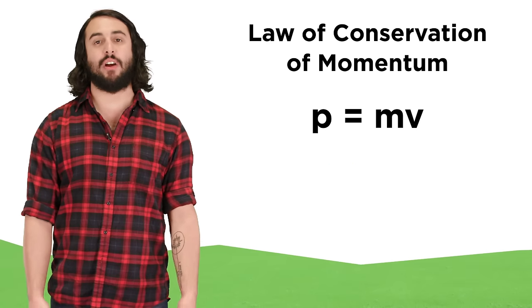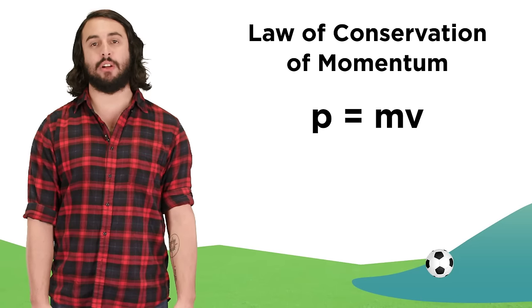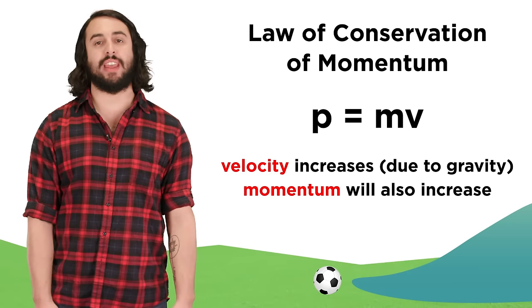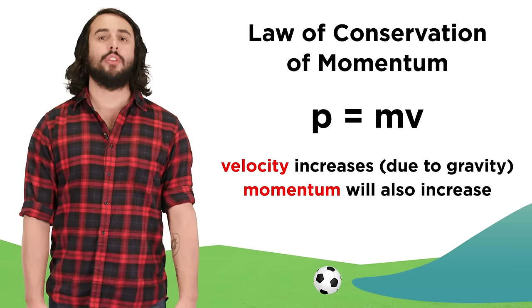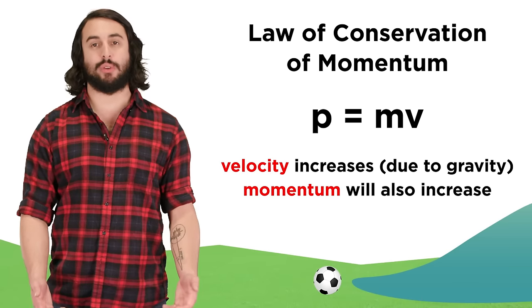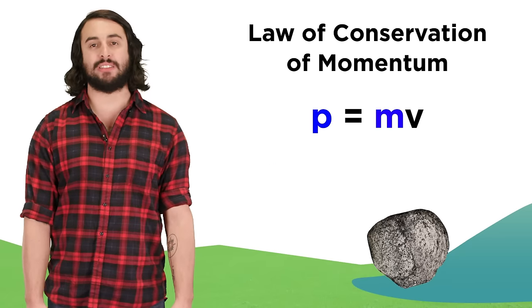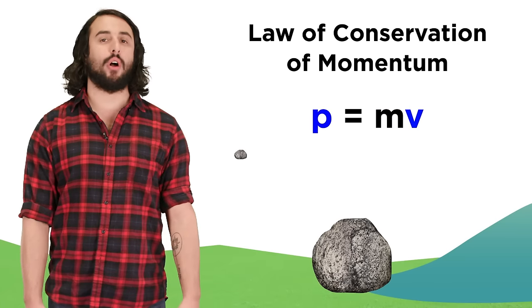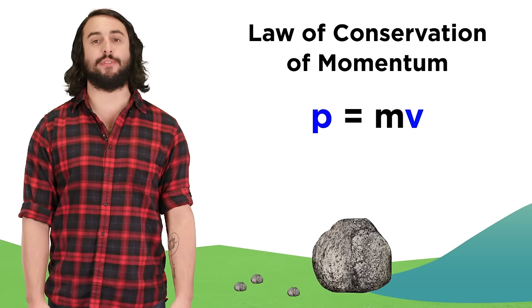Our everyday use of the word is fairly accurate — we might say that as a ball rolls down a hill it will gather momentum. This is true because its velocity will increase as the force of gravity accelerates it towards the ground. The more momentum the ball gathers, the more difficult it will be to bring it to a stop. An object in motion can have a larger momentum by virtue of being more massive, like a huge boulder, or also by moving at high velocity, like a tiny hailstone or meteorite falling from the sky.